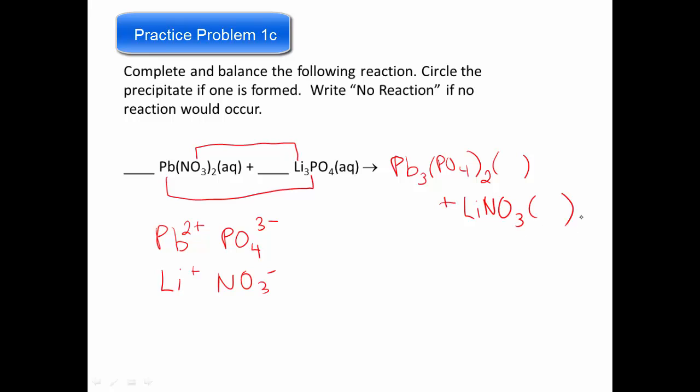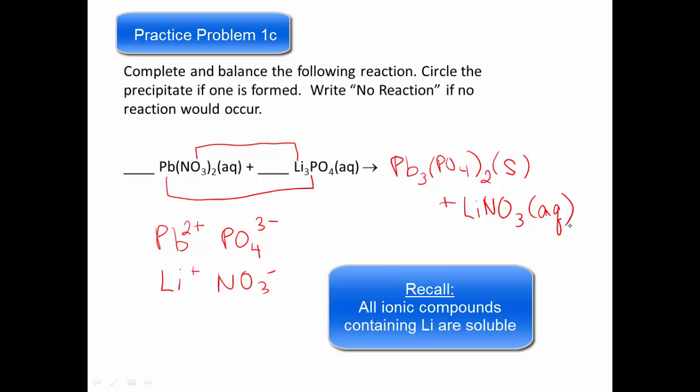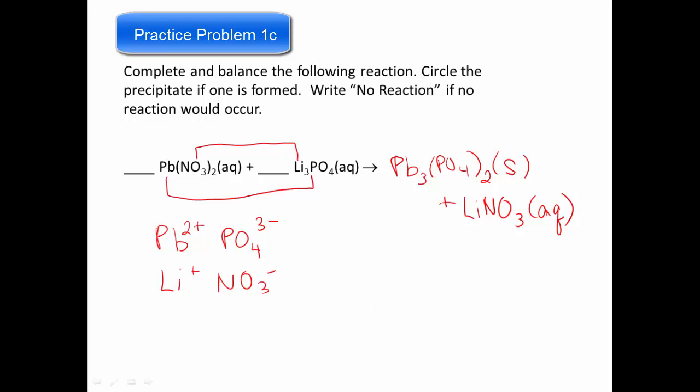And we will look up the solubility of these two. So when we look up the solubility, we see that lead phosphate is going to be our precipitate. And lithium nitrate is going to be in solution. So once again, we don't use the no reaction because we do have a precipitate.